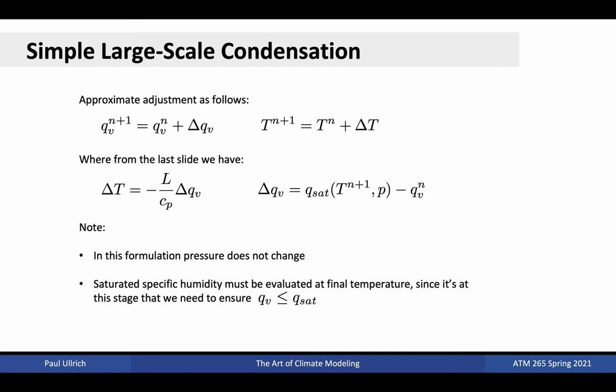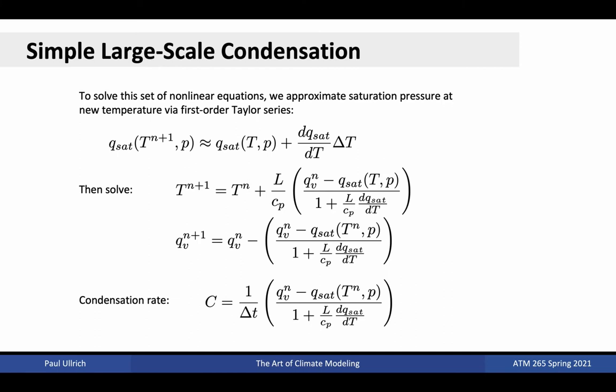Note that since pressure is unchanging, it is held constant through this process. However, the saturation-specific humidity must be evaluated at the final temperature of the system, since we want the specific humidity to be equal to Qsat after the parametrization is called. To solve the non-linear equations in this system, we can approximate the change in saturation-specific humidity over the time step as the derivative of Qsat with respect to temperature multiplied by the temperature change. Plugging this into our earlier equation and solving then yields the three equations for the updated temperature, water vapor, and condensation rate shown here. This concludes our simple microphysics parametrization.